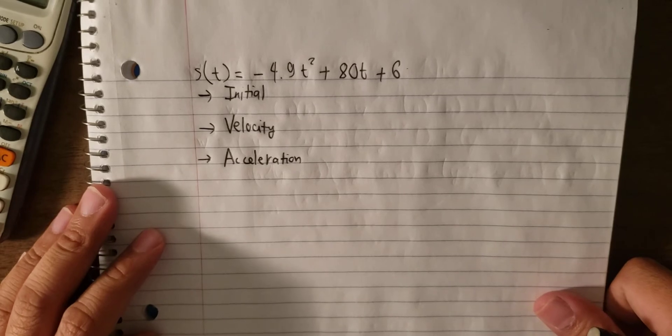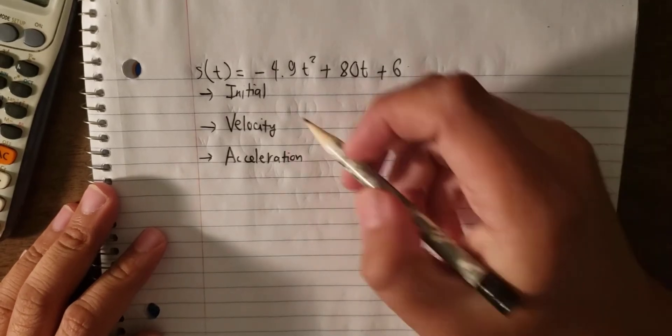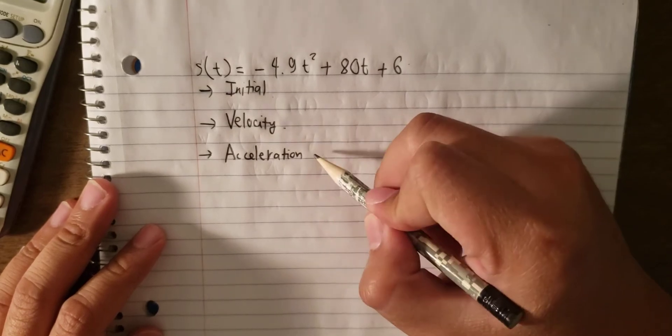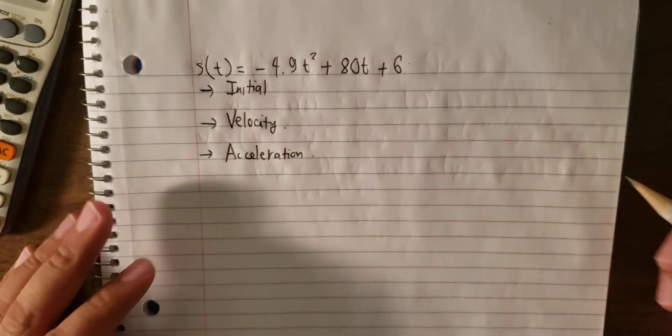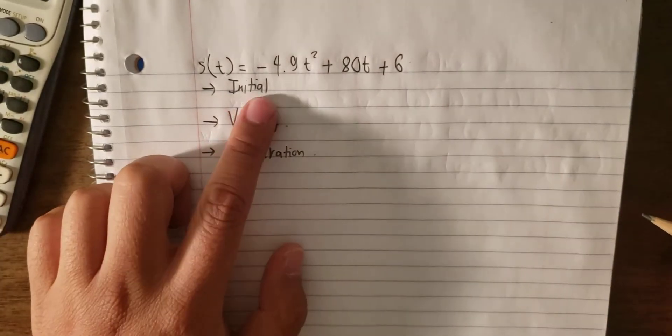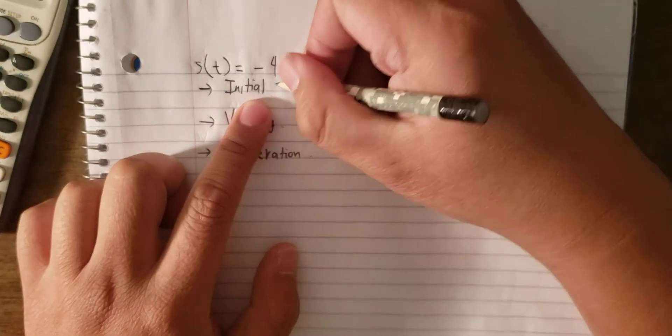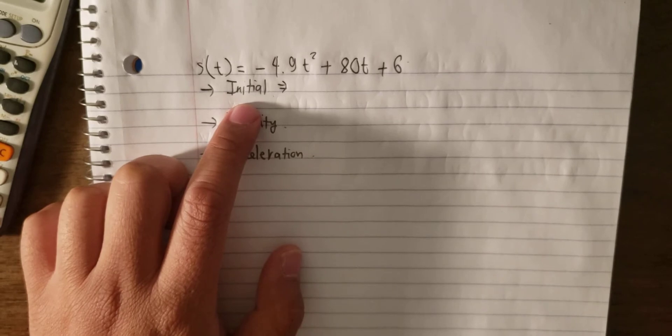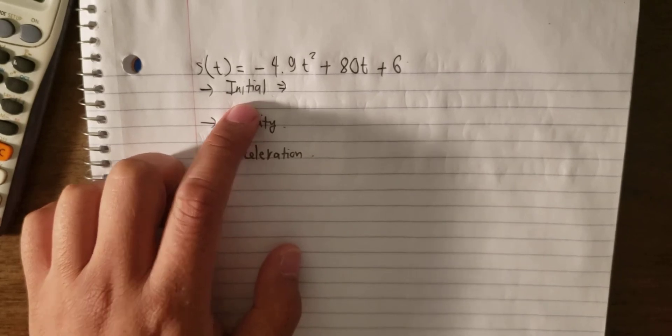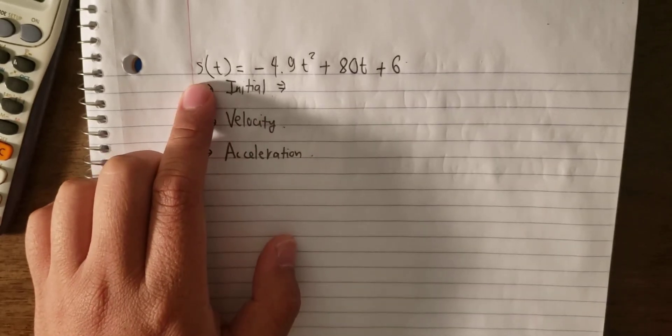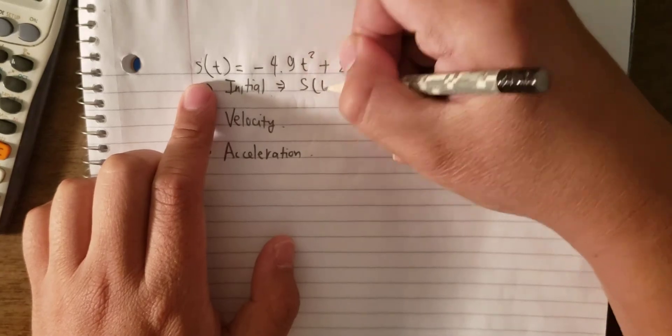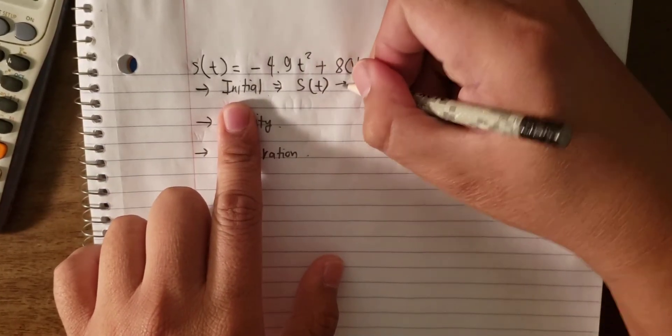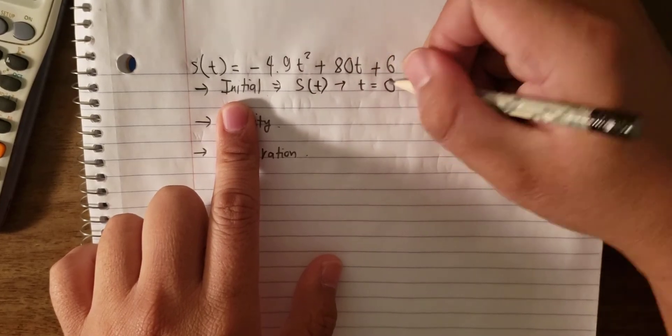So today I will talk about how to find initial location, velocity, and acceleration. Initial means at the beginning of moving the object. We have the function s(t), and we know that initial should be at t equal to 0.